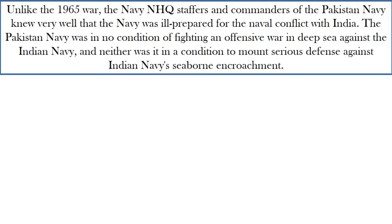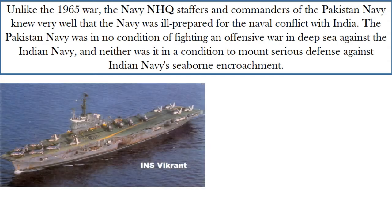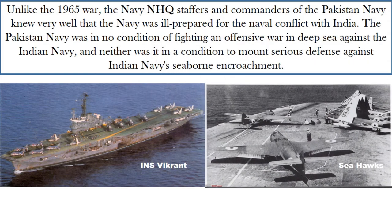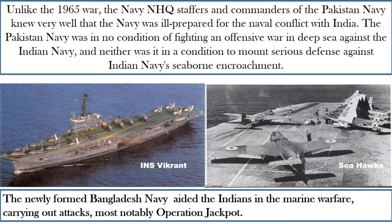Unlike the 1965 war, the Pakistan Navy knew it was ill-prepared for naval conflict with India, in no condition to fight an offensive war in the deep sea or mount a serious defense against Indian Navy's seaborne operations. Seahawks from the carrier INS Vikrant struck Chittagong, Barisal, and Cox's Bazar, destroying the eastern wing of the Pakistan Navy and effectively blockading East Pakistan's ports, cutting off any escape routes for stranded Pakistani soldiers. The newly formed Bangladesh Navy aided the Indians in the main marine warfare, carrying out attacks — most notably Operation Jackpot.